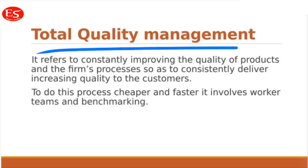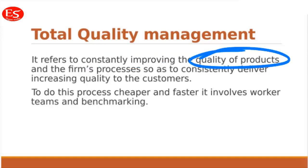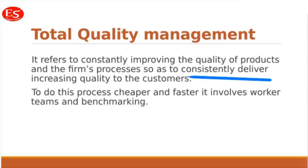Total quality management, as the name suggests, is about constantly improving the quality of products and firm processes so the firm can continuously deliver better quality to customers. It means improving the overall quality of the product and the firm's processes. Enhancing product quality increases cost somewhere, but making processes more efficient reduces cost, and doing both increases the firm's efficiency and consumer base.